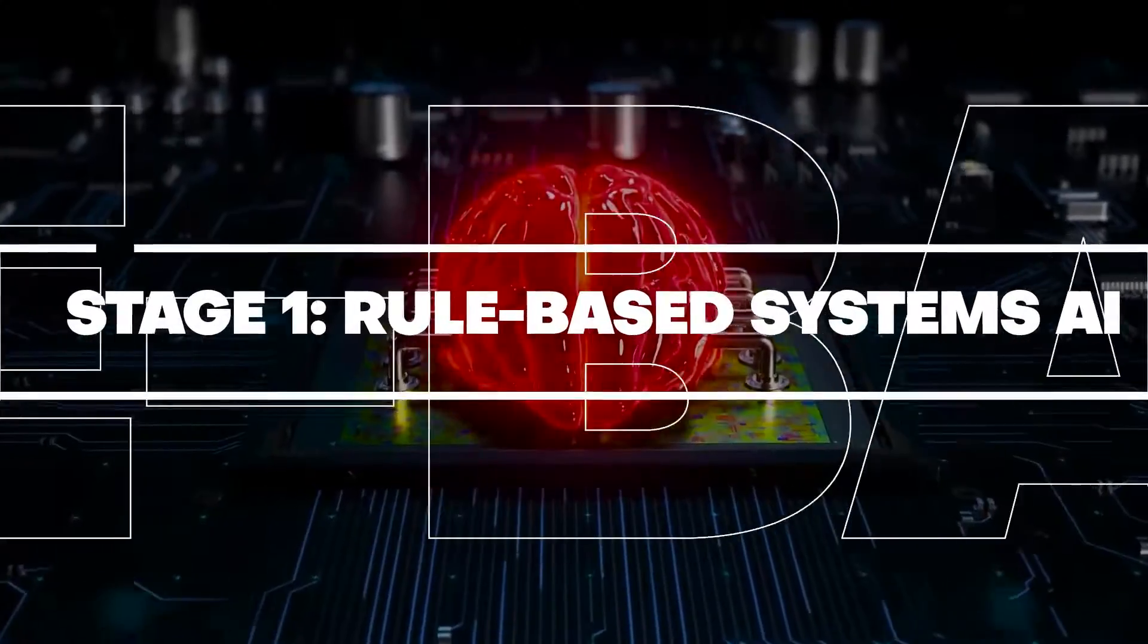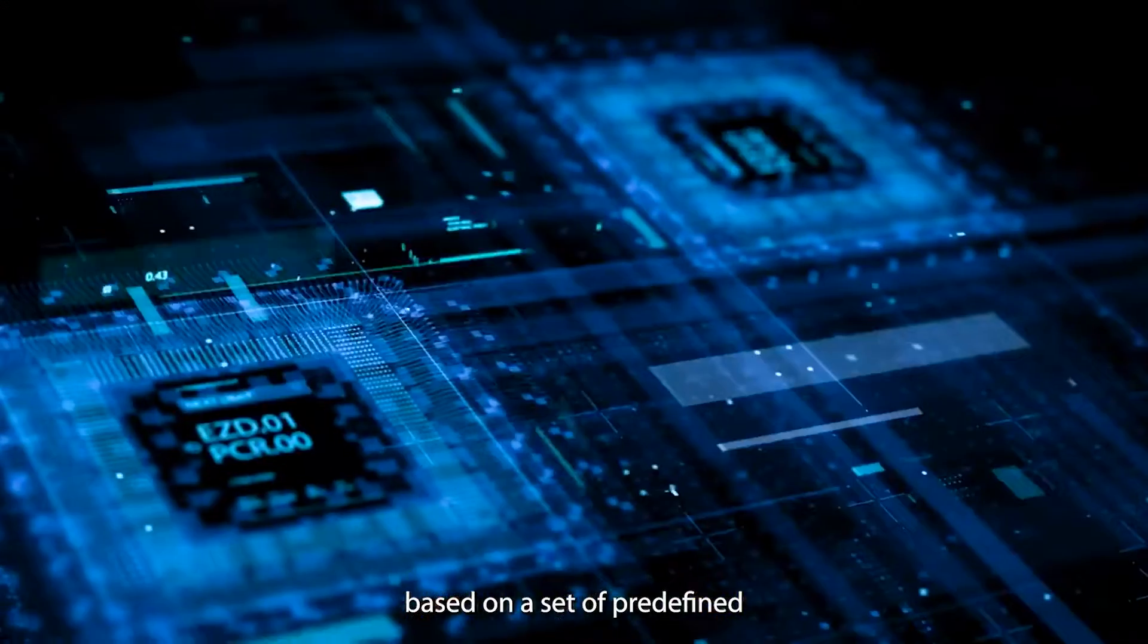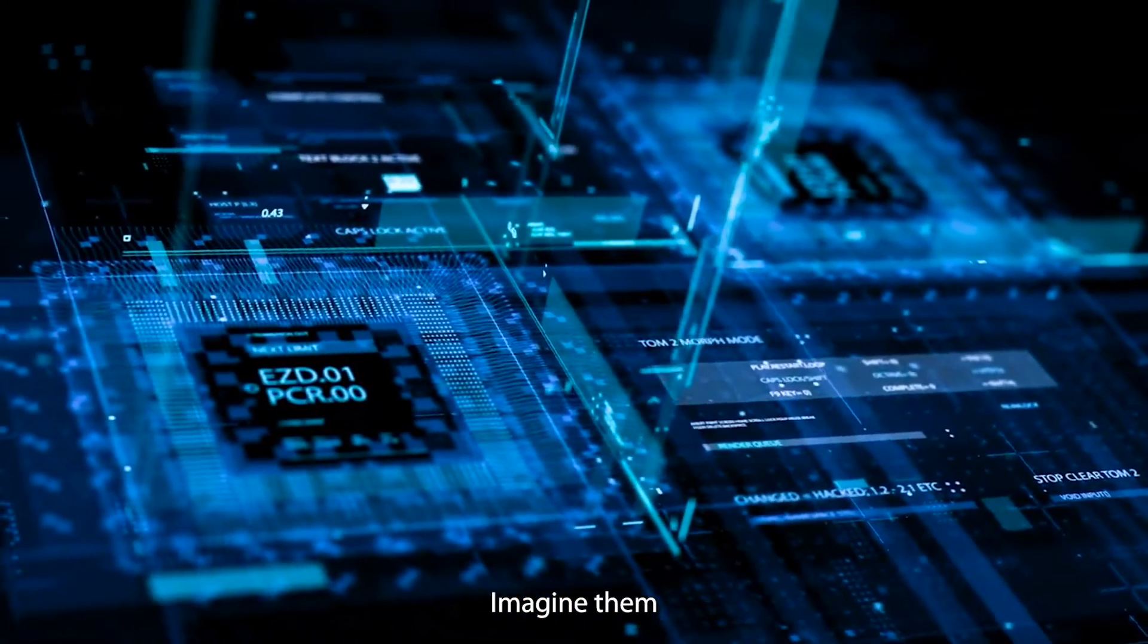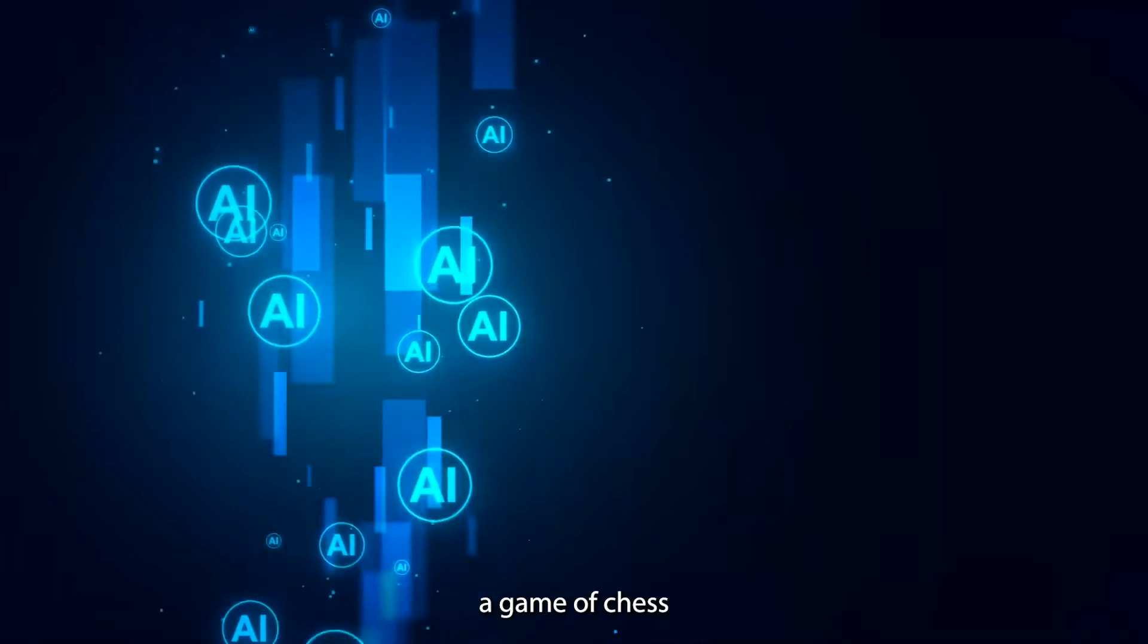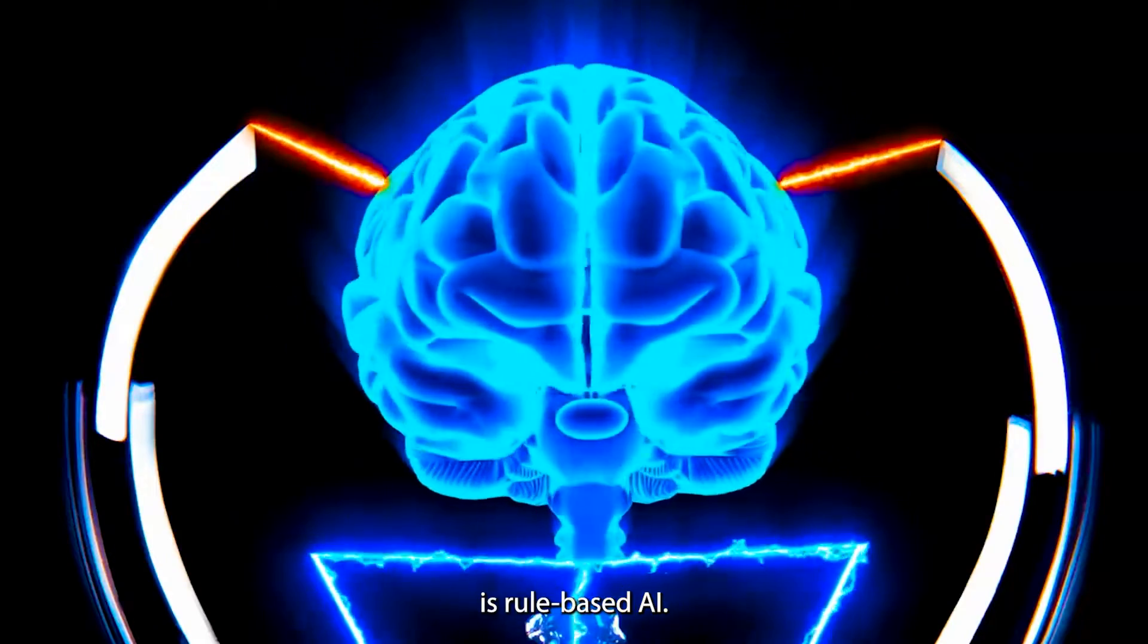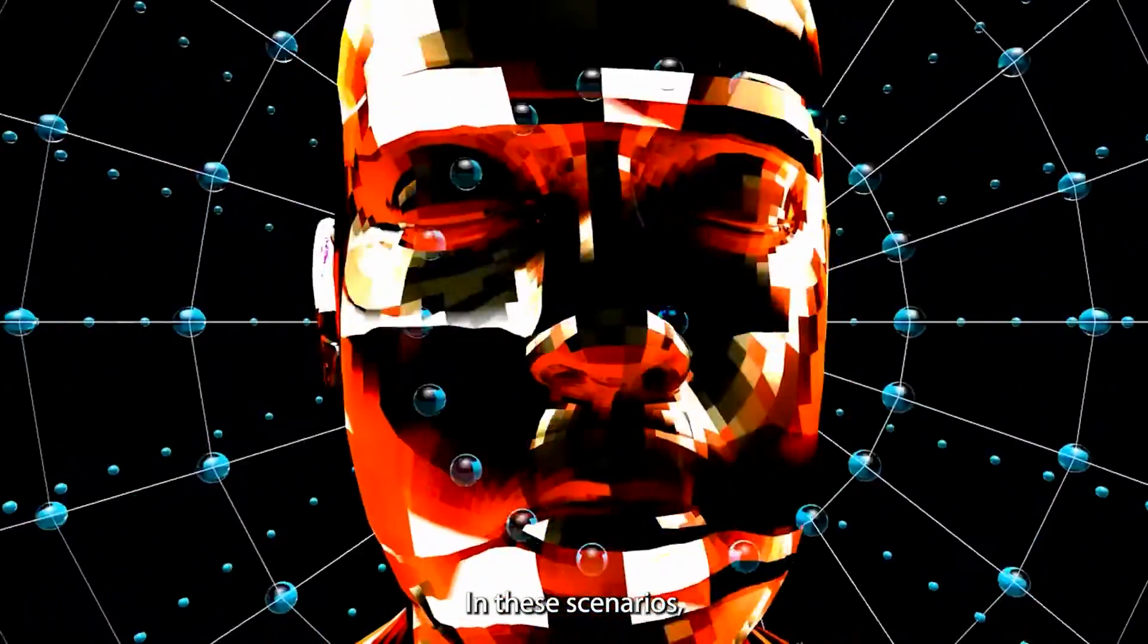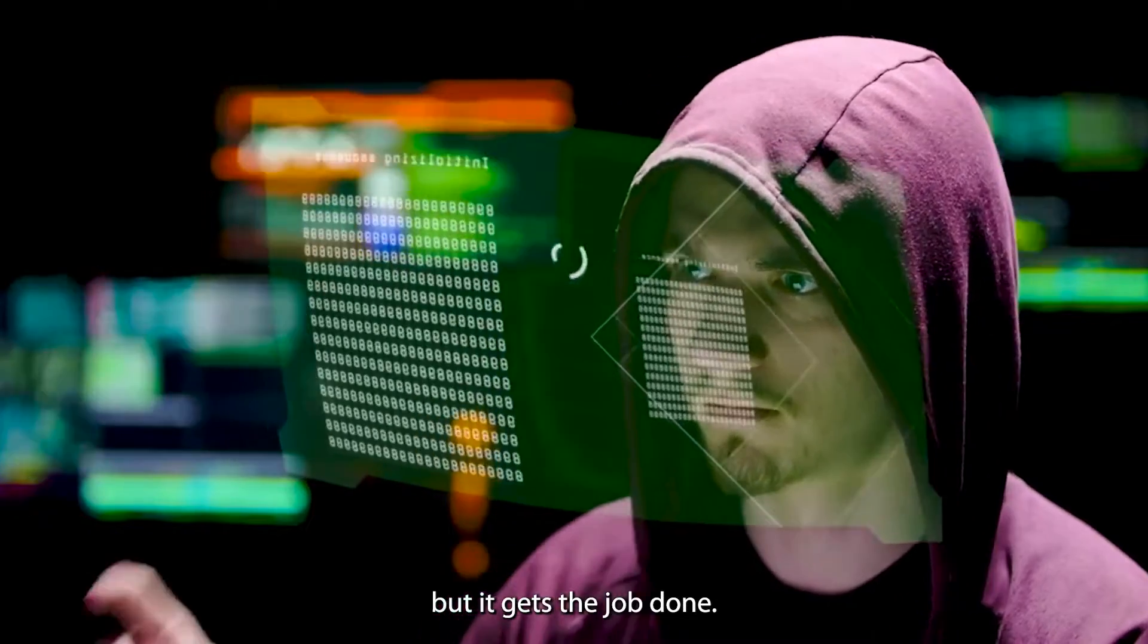Stage 1: Rule-Based Systems AI. These are like the building blocks of AI based on a set of predefined rules set by humans. Imagine them as the fundamental instructions in a game. When you play a game of chess or drive a car in a video game, what you are interacting with is rule-based AI. In these scenarios, a rulebook guides every move you make in the game. It's not sophisticated, but it gets the job done.